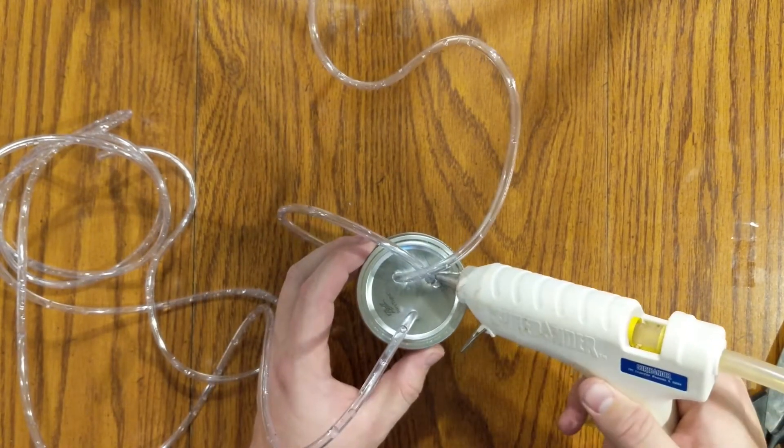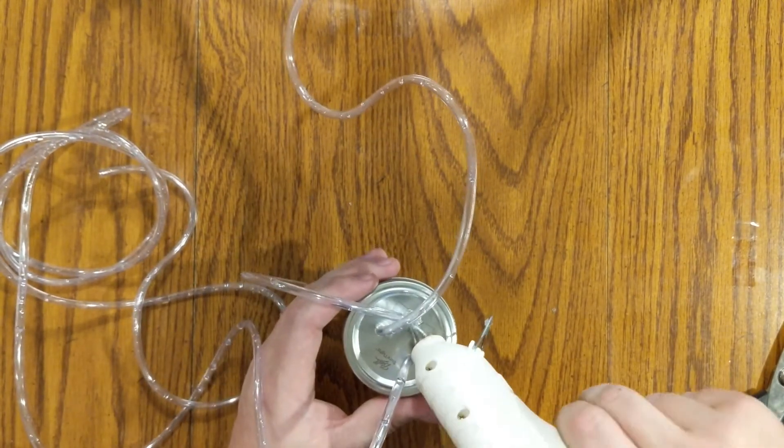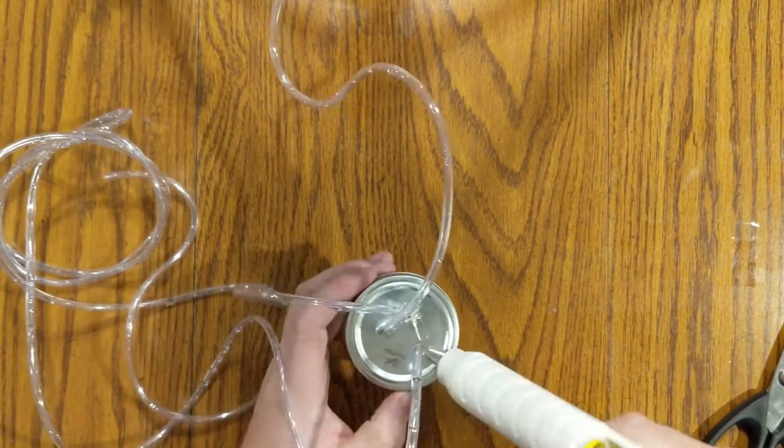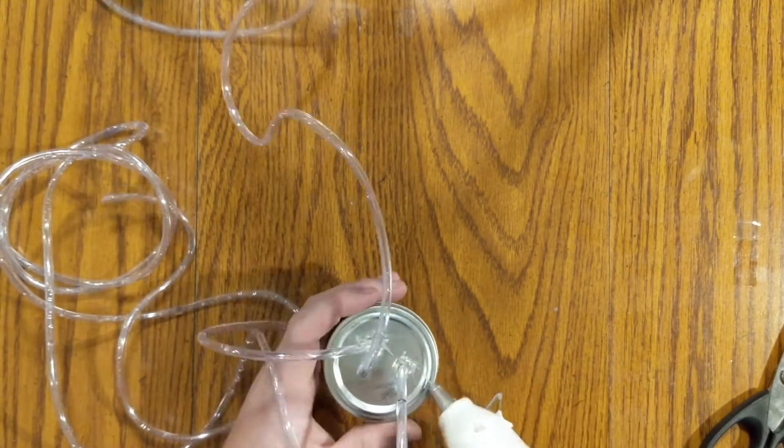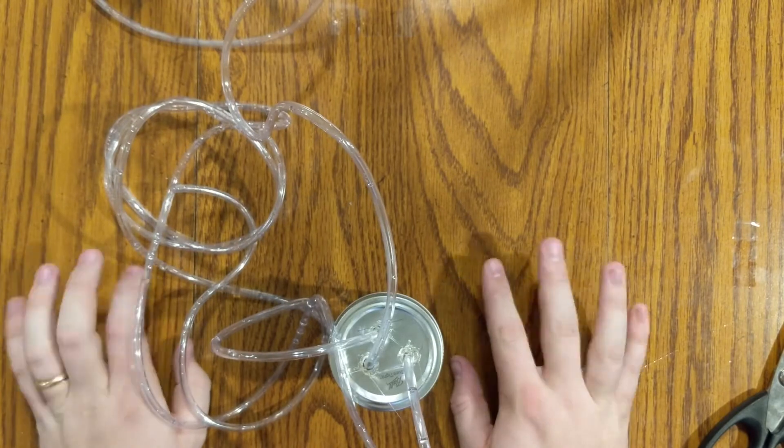So after you get that, go ahead and take your hot glue gun and just rim around where the hoses go into the lid. This will keep it airtight as well. And wait for it to dry.